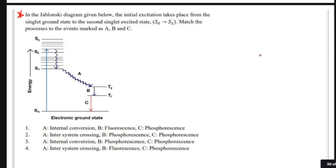This was a good question on the Jablonski diagram. The initial excitation takes place from the singlet ground state to the second singlet excited state. Match the processes to events A, B, and C. In the diagram, the system goes from the singlet ground state up to the second singlet excited state — that is absorption. Then energy is lost through vibrational relaxation via internal conversion as it comes back down in energy.